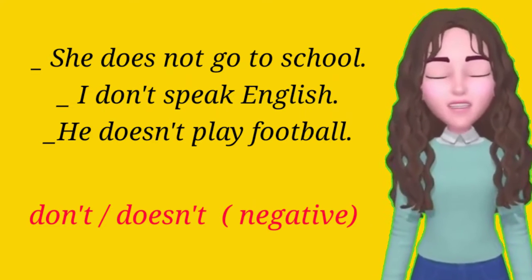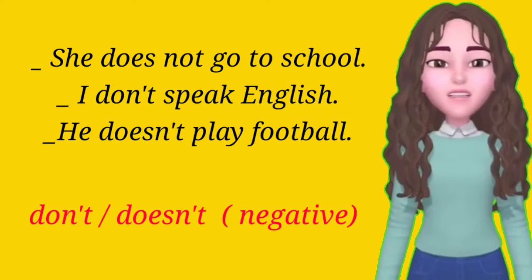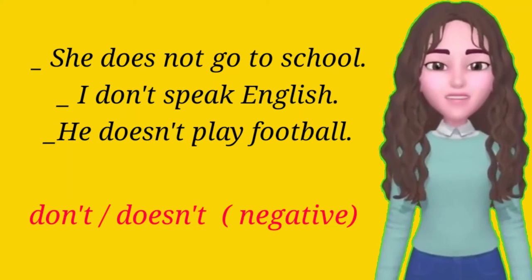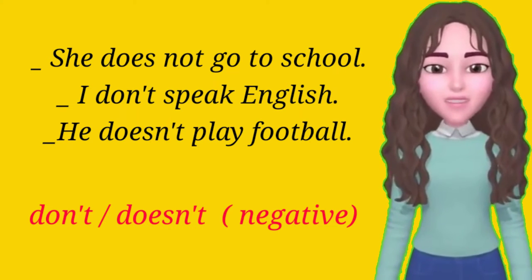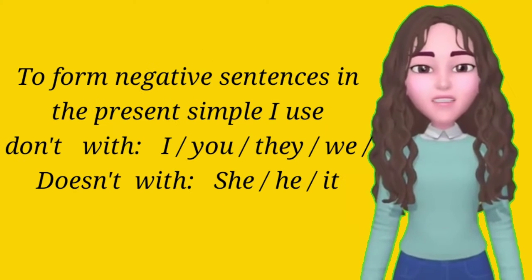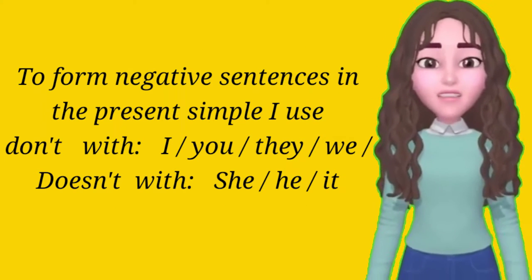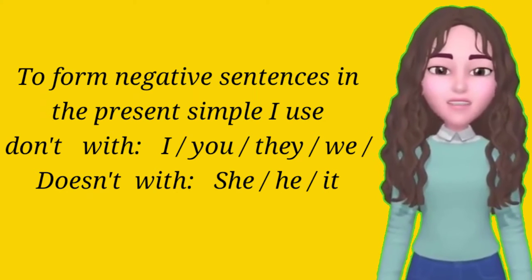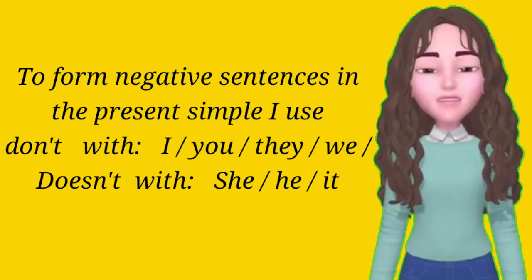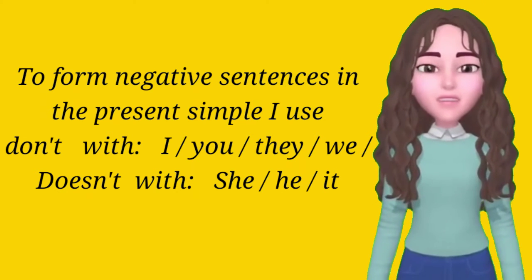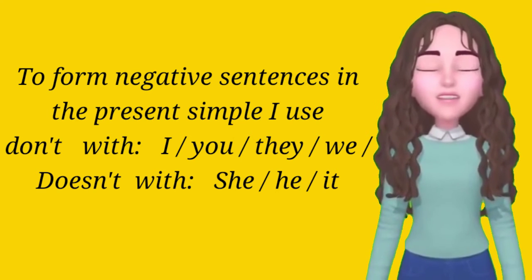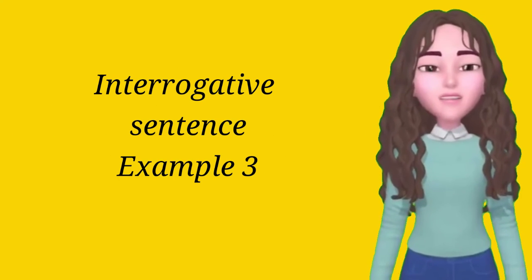Now let's move to the negative sentence. Example two: she does not go to school, I don't speak English, he doesn't play football. In the negative form, we use don't or doesn't. We use don't with I, you, they, we — and doesn't with she, he, it.